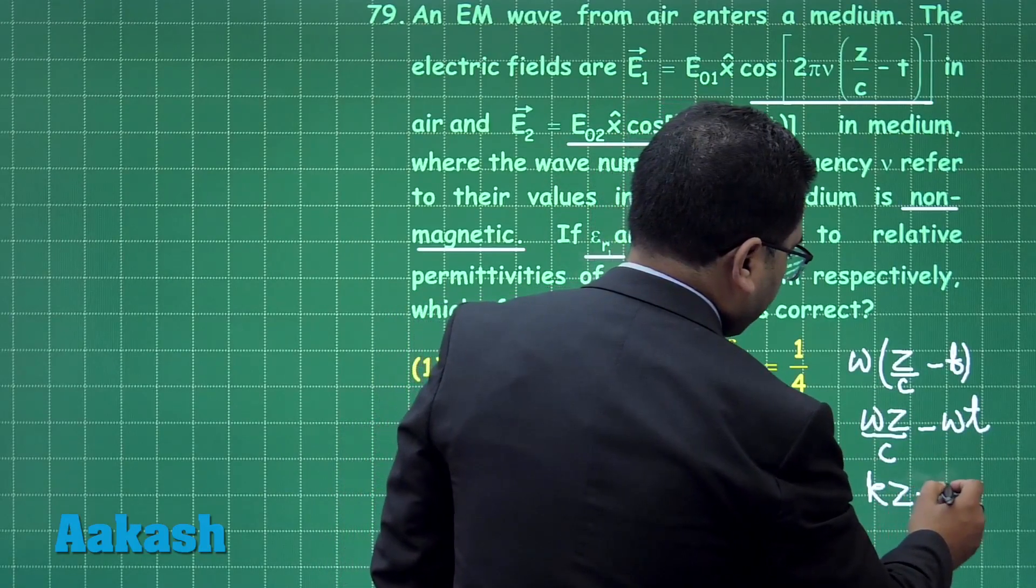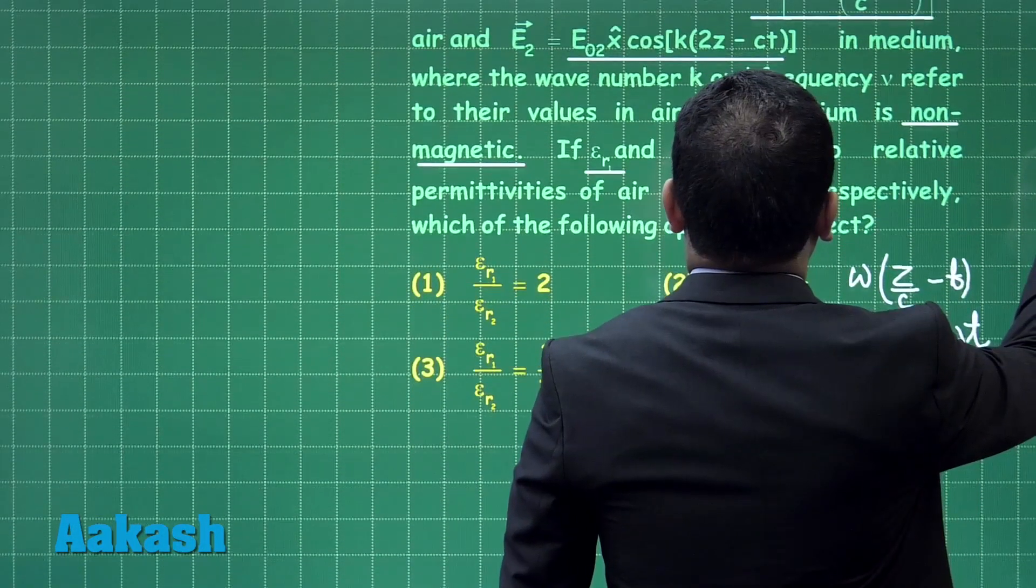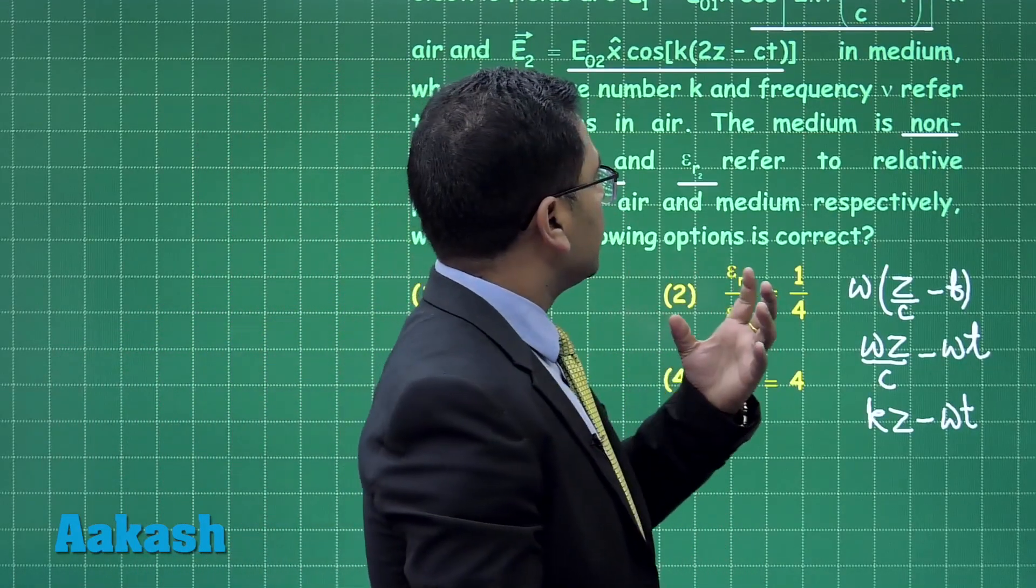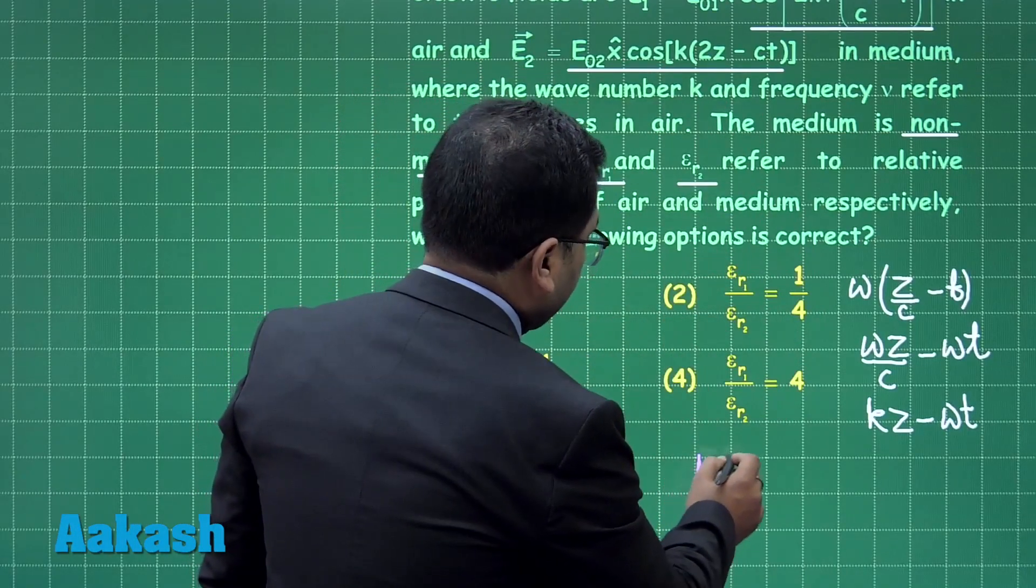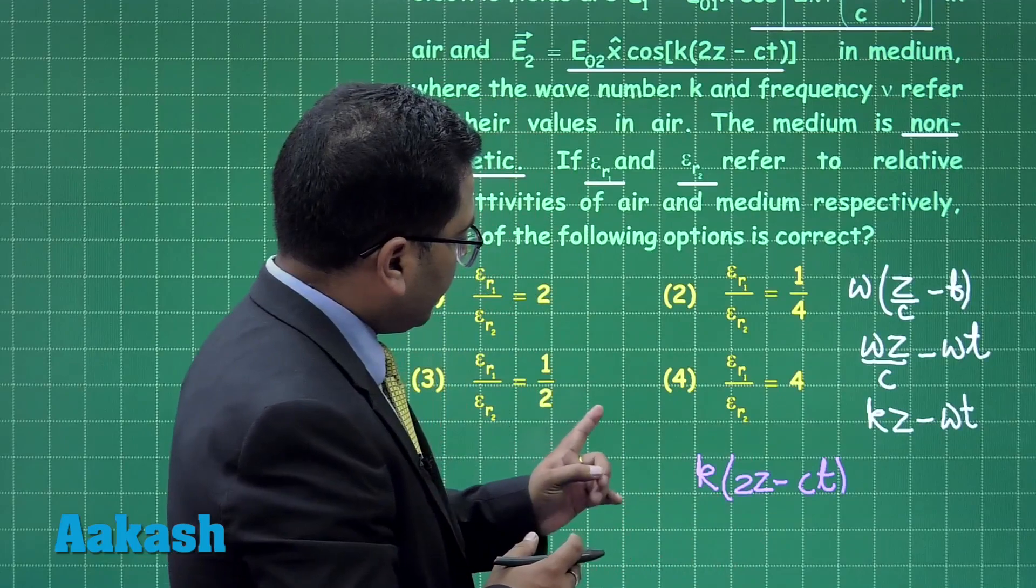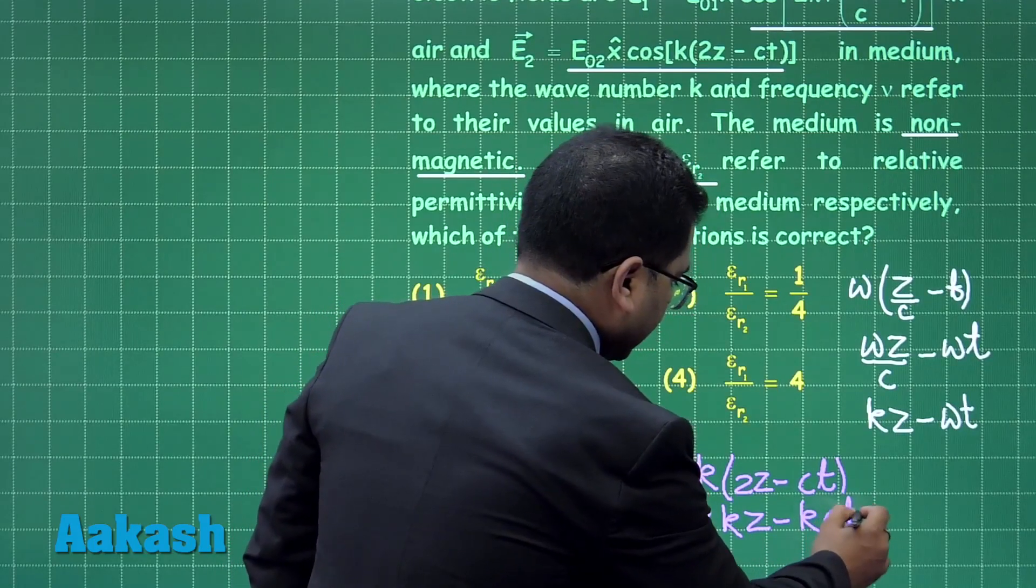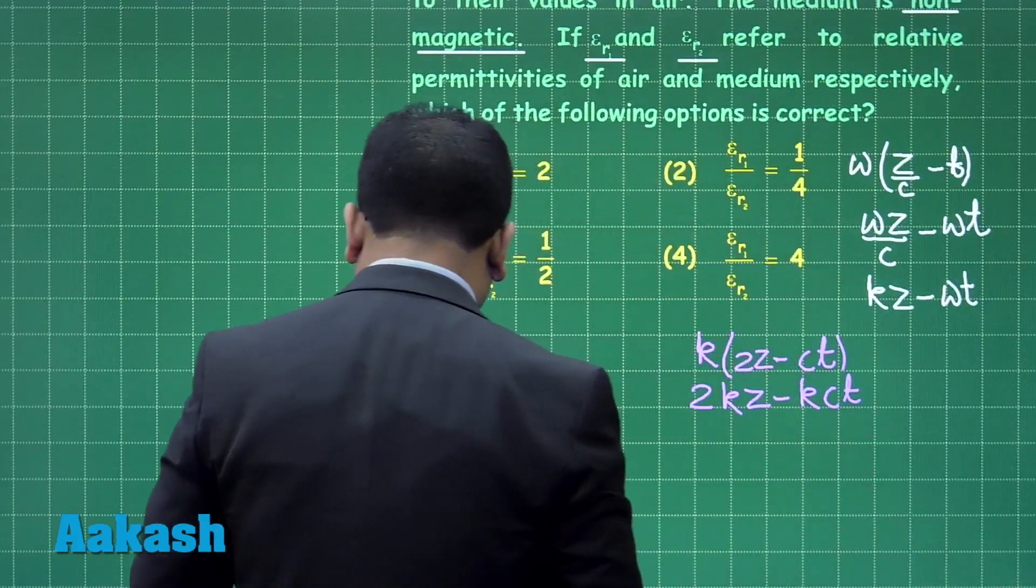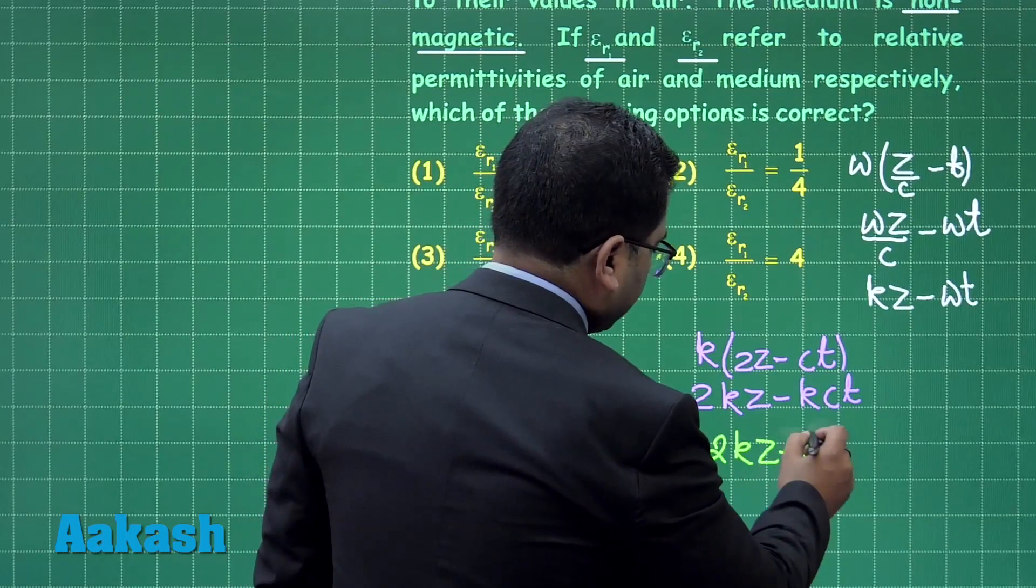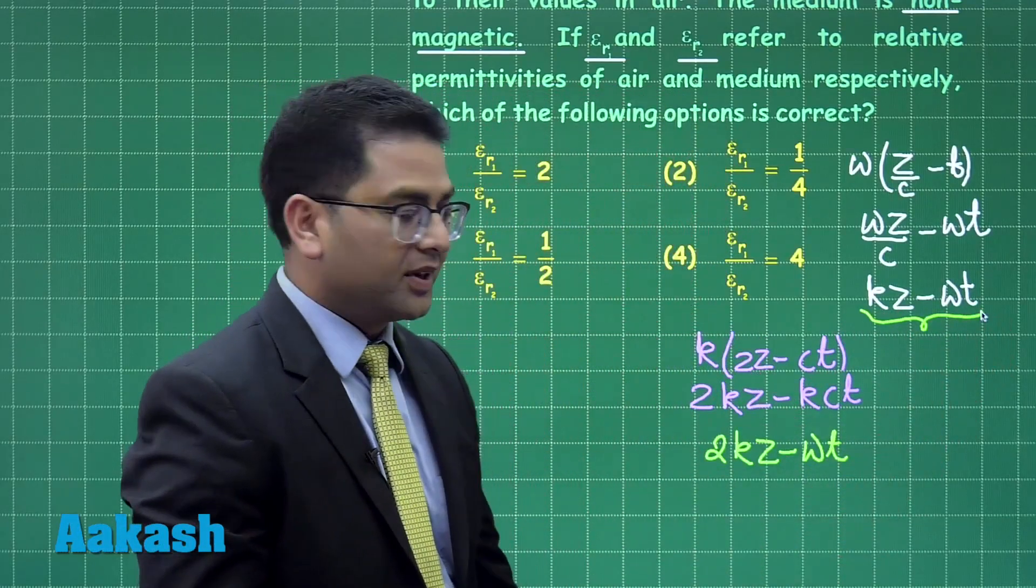Opening this up, we get omega z by c minus omega times t. Omega by c can be written as k, so kz minus omega t. This is the phase in air. Let's see the phase in the next medium: that is k(2kz) minus kc times t.